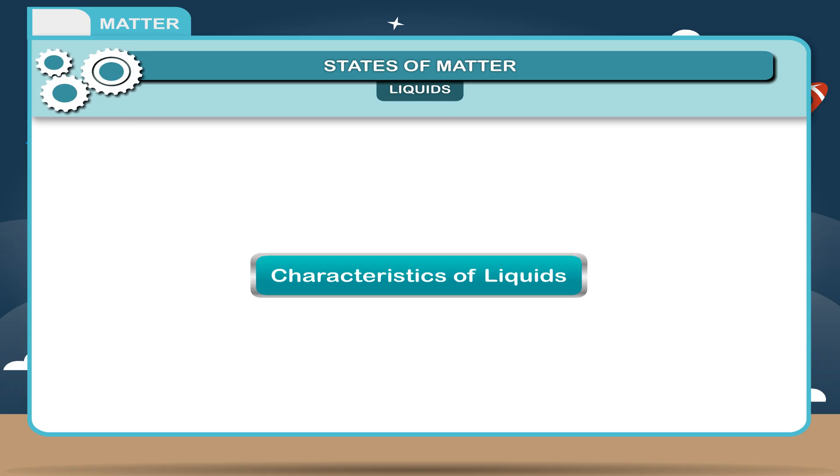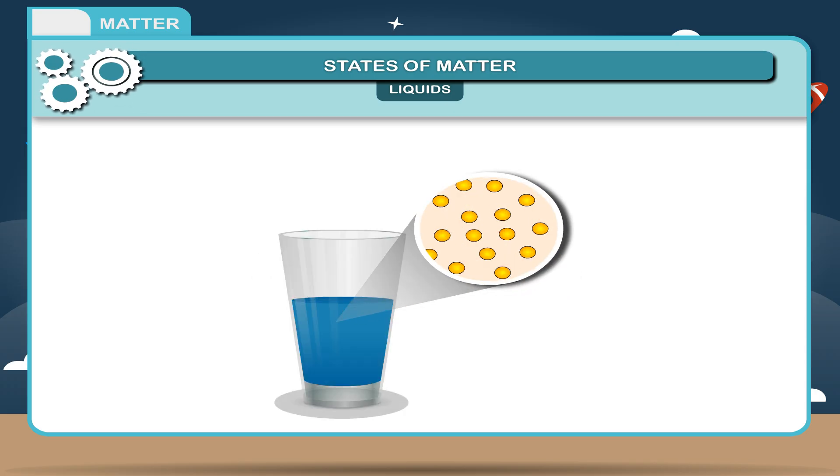Characteristics of liquids: In liquids, the intermolecular force of attraction is slightly higher than the force of repulsion. Hence, the constituent particles can aggregate but show a tendency to flow.